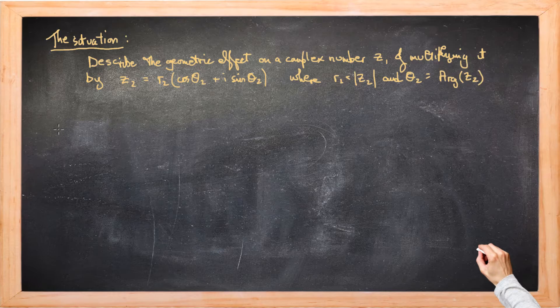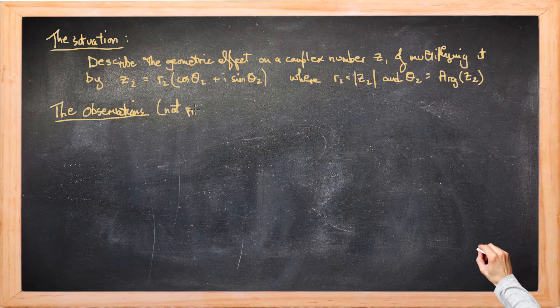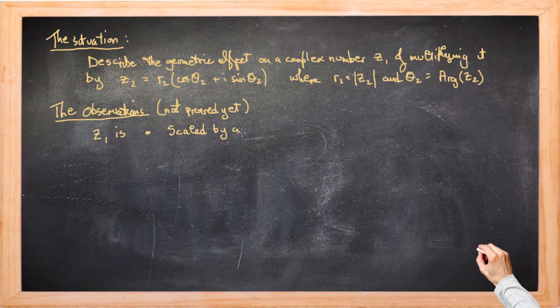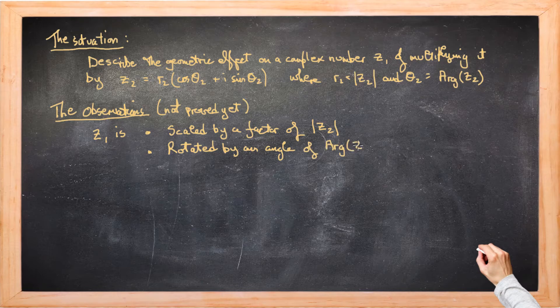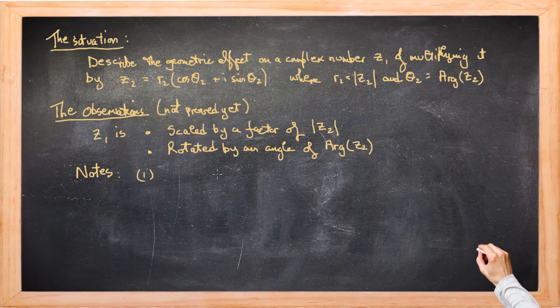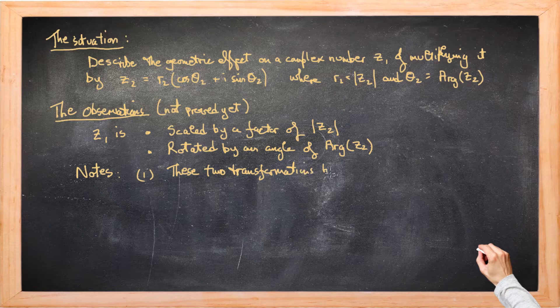So what have we observed so far? And remember these are only observations. We've not proved anything mathematically yet. So Z1 is scaled first of all by a factor of the modulus of Z2 and then it's rotated by an angle of the principle argument of Z2. And we need some notes to go with this. First of all, both of these transformations have the origin at the centre.